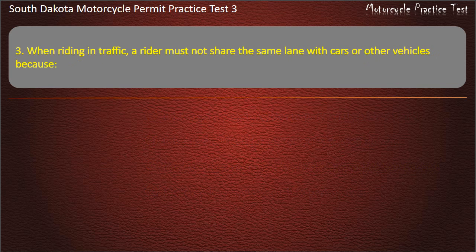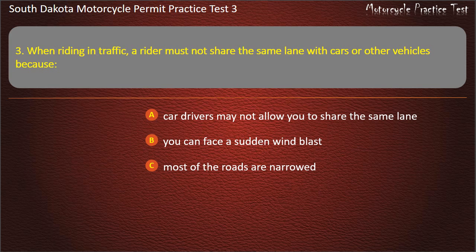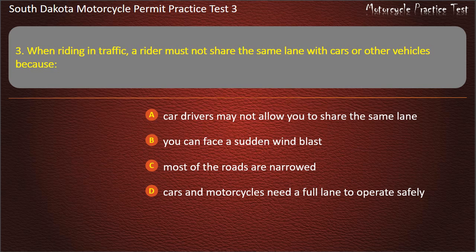Question 3: When riding in traffic, a rider must not share the same lane with cars or other vehicles because: Car drivers may not allow you to share the same lane; You can face a sudden wind blast; Most of the roads are narrowed; Cars and motorcycles need a full lane to operate safely. Answer: Cars and motorcycles need a full lane to operate safely.